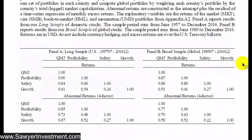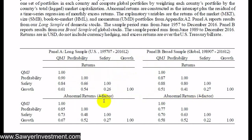Table five shows the correlations between each individual quality component — profitability, safety, and growth — and the overall quality factor. Each component shows pretty high correlations with the QMJ factor, both for excess returns over T-bills and for alpha after the four-factor model. This implies that if a company is high in one component, it's likely high in the others as well. For ease of analysis and presentation, the authors use the overall quality measure composed of all three components rather than presenting them individually.